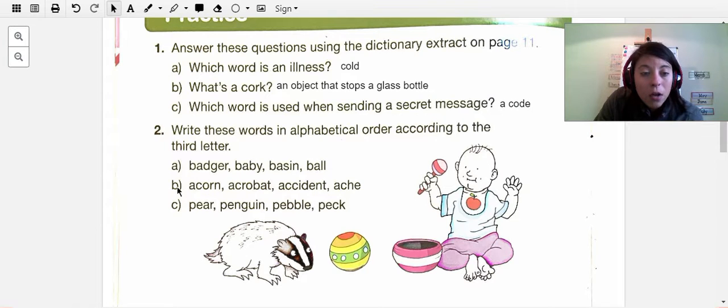Then in letter B, you have this group of words: acorn, acrobat, accident, and ache. Ache is when something hurts, by the way. So A is the first letter of all the words, and C is the second letter in all the words. But the third letter in acorn is O, in acrobat is R, in accident is C, in ache is H.